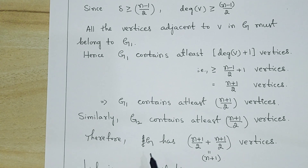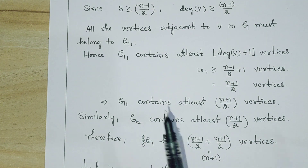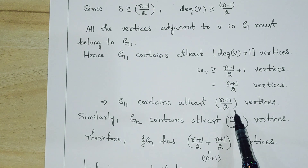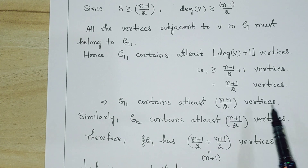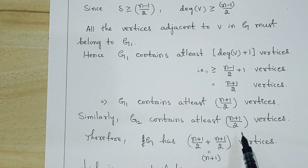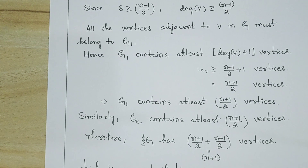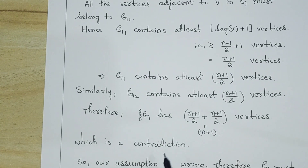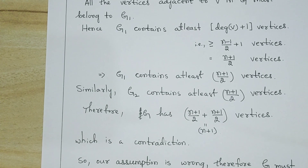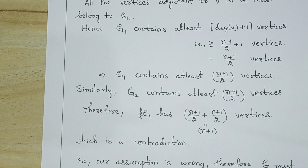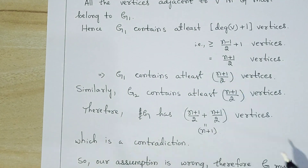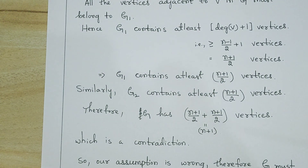Since G1 and G2 are both components of G, G must contain at least (n+1)/2 + (n+1)/2 = n+1 vertices. But this contradicts the hypothesis that G has exactly n vertices. Therefore our assumption that G is not connected is wrong, and G must be connected.